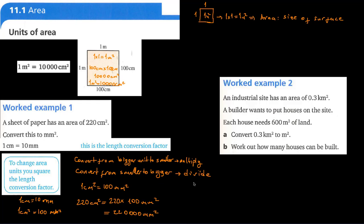Let's continue with the next exercise. An industrial site has an area of 0.3 kilometers square. A builder wants to put houses on the site, and each house needs 600 meters square of land. We will first convert 0.3 kilometers square to meters square.